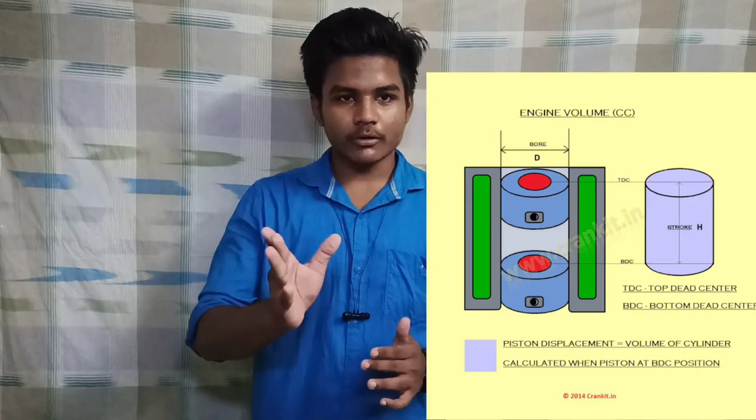RPM measures how fast the engine is revolving per minute. Now, looking at engine displacement: starting with 100cc, 149.5cc, 199.5cc. CC stands for cubic centimeter. It is measured by the distance the cylinder travels from one end to the other inside the engine.